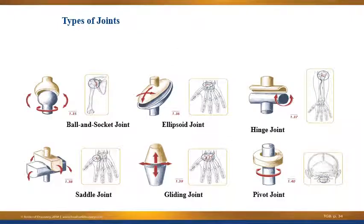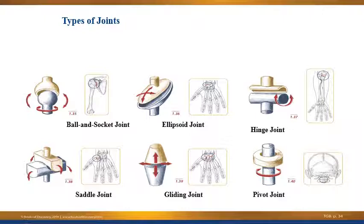Now we're going to look at types of joints. As we went through joint motions, you noticed some joints moved more than others and some had certain restrictions. Depending on joint function, there are different types of joints. First is the ball and socket joint — the glenohumeral joint is an example. A ball and socket joint has a spherical surface of one bone fitting into a depression, and joints like this can move in every plane. Think of another joint that would be considered a ball and socket joint.